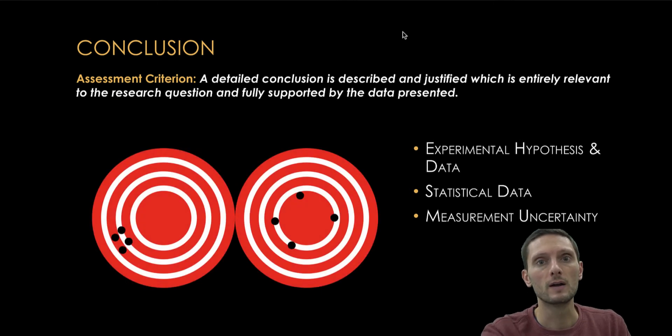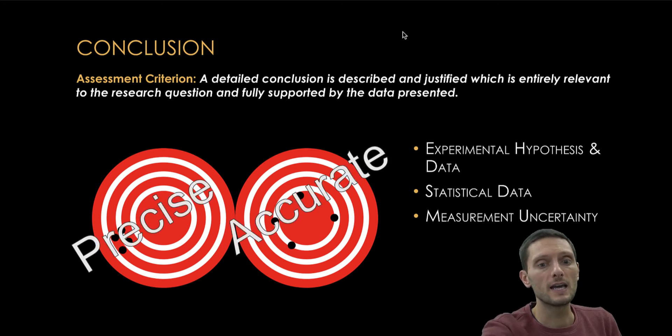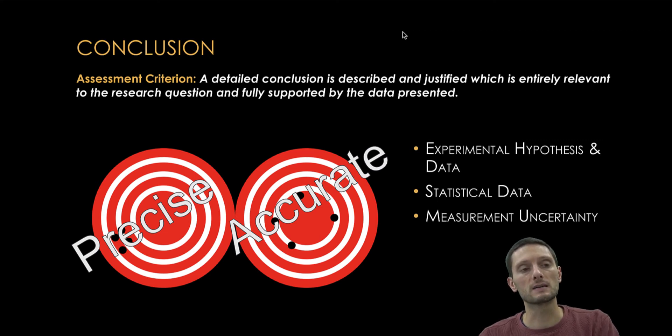Typically in experiments that are done for IB Bio, accuracy maybe could be discussed and compared, but it's probably going to require some comparison to some published values, some accepted context value for whatever the experiment is. Typically those may not be available or may be difficult to find. Rather, what we can compare to is our precision. That's what we want to use our statistical data for, is to look at is our data that we've collected precise.